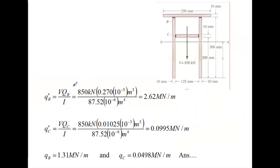To find shear flow, compute VQ over I: take V (the beam shear) times Q, divided by total moment of inertia, giving 2.62 mega-Newtons per meter at B. Since there are two glue surfaces, divide by two — giving 1.31 mega-Newtons per meter at each surface. For C, the same calculation gives 0.0498 mega-Newtons per meter at each surface.